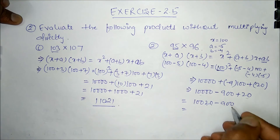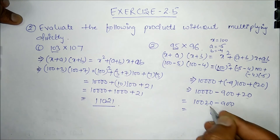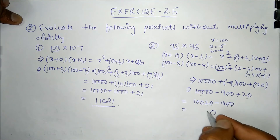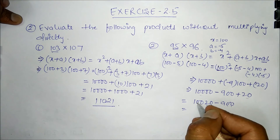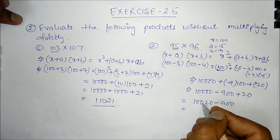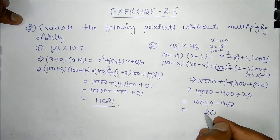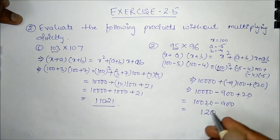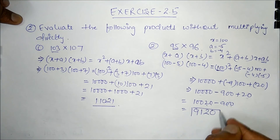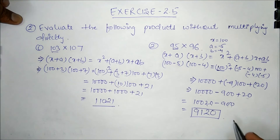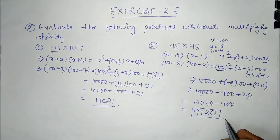Solving this: 10000 - 900 + 20 = 9120. So this should be the answer for this particular question. Thank you.